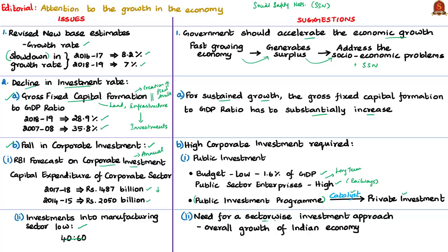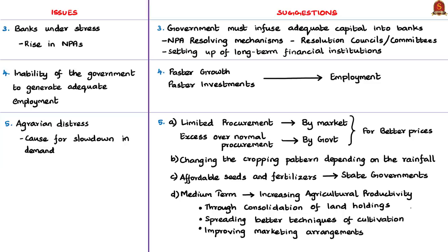The author stresses the need for a sector-wise investment approach to attract more investments. The second issue is the banking sector. Banks are under heavy stress and the ratio of non-performing assets has risen. The primary activity of a bank is lending money, and if NPAs are higher, the bank is likely to have a capital shortage. The government must infuse adequate capital into banks.